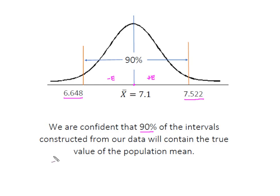Only 10% of the time will the true population mean be above or below this interval — 5% of the time it will be higher, and 5% of the time it will be lower.